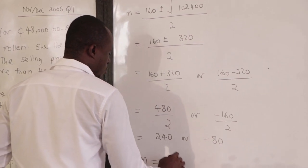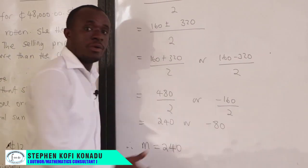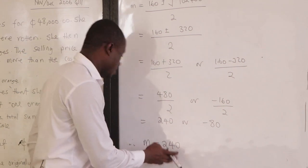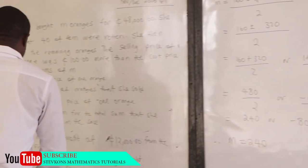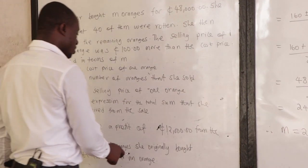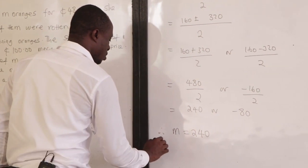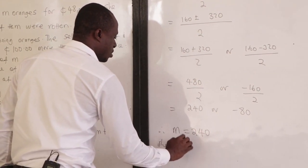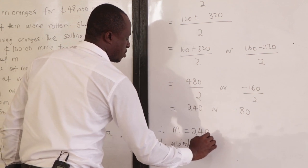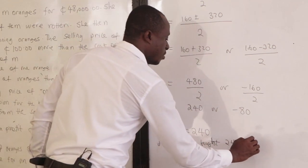This gives M equals 480 over 2, which is 240, or M equals negative 160 over 2, which is negative 80. Therefore M equals 240, because the number of oranges can never be negative. She originally bought 240 oranges.